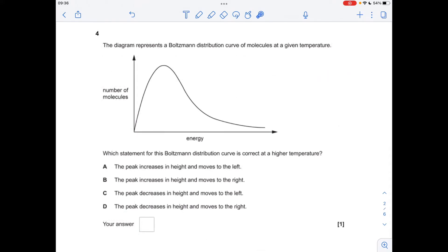Number 4, I'm going to use the handy trick my A-level chemistry teacher told us when we did Boltzmann curves. Think of it like a piece of wire. So if you increase the temperature, you pull the wire to the right. So what's going to happen? The peak's going to drop and the curve's going to shift over to the right. So it's D.